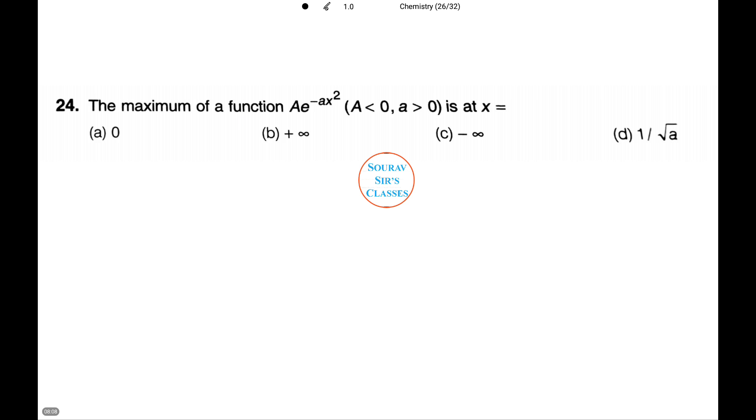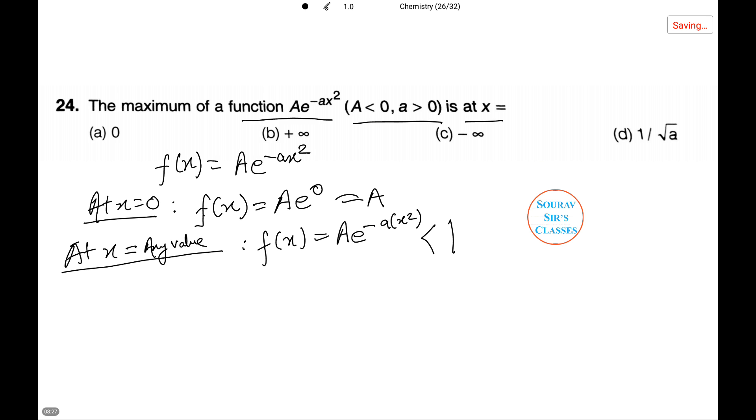Now we need to find the maximum value of a function Ae^(-Ax^2), where capital A is greater than 0 and small a is greater than 0, at x. In the given function, first we check the value by putting x equals 0. At x equals 0, f(x) equals A. For any other value, the value of x is always less than 1. This is due to the negative sign present on E. Thus the maximum value of this function is at x equals 0, that is A, and hence the answer is 0.